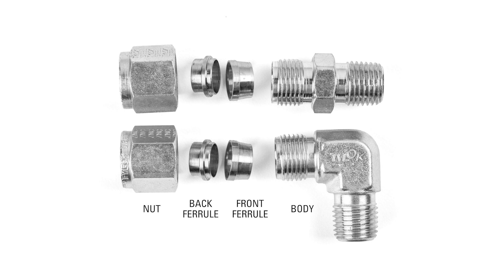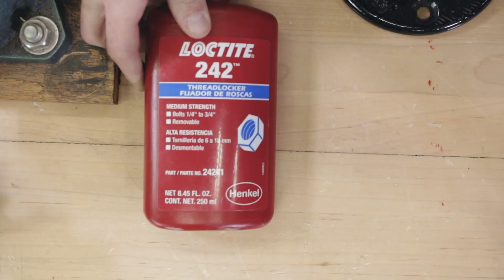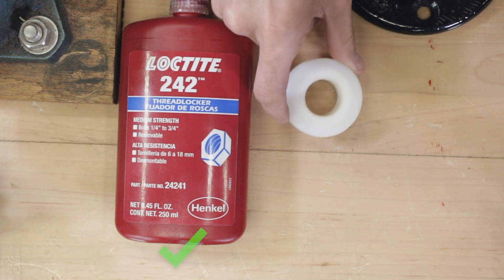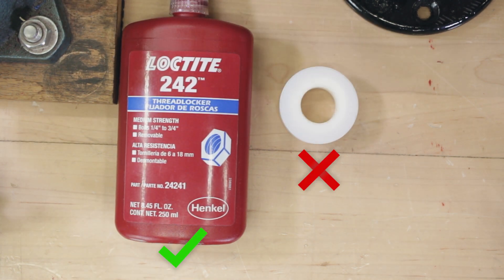For all fittings on control valves and equipment, we suggest using a thread sealant such as Loctite rather than Teflon tape to avoid potentially getting any tape inside the equipment.